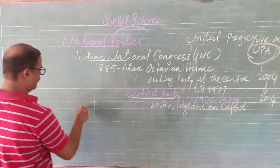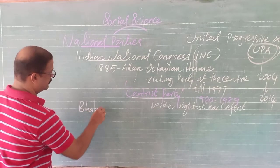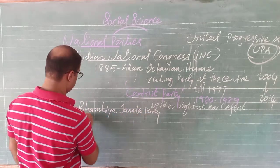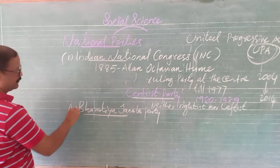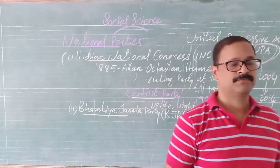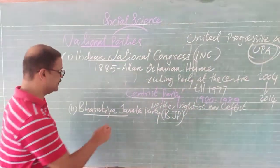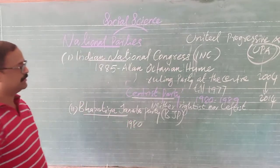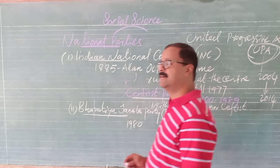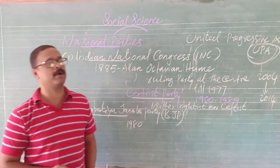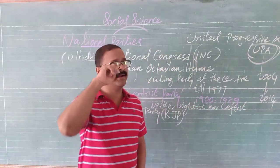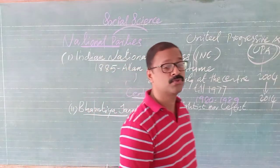The second party is BJP, or Bharatiya Janata Party. This party was founded in the year 1980, emerging from the earlier Jana Sangh, which was formed by Shyama Prasad Mukherjee in 1951. This party wants to build a strong and modern India by drawing inspiration from India's culture and values.